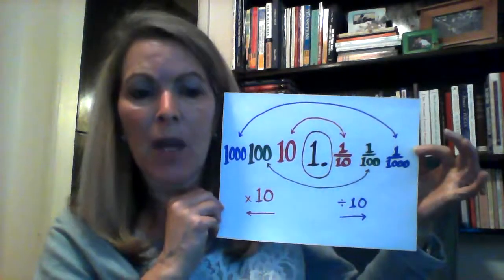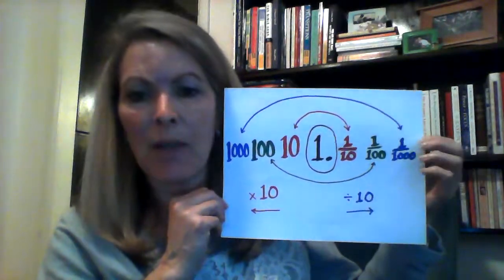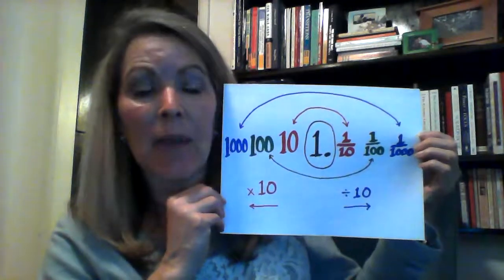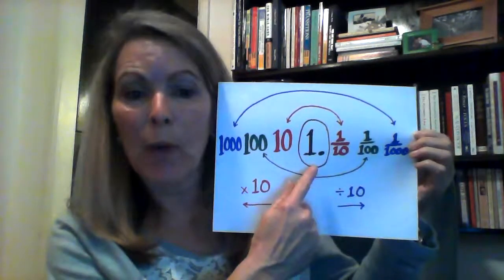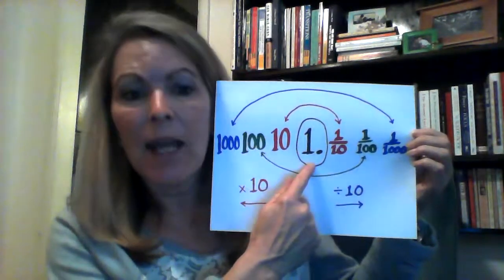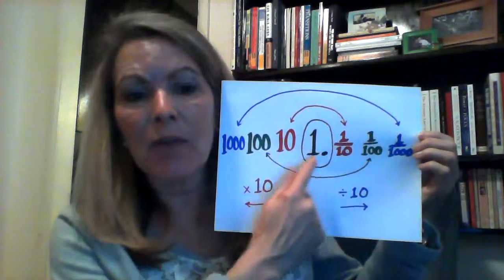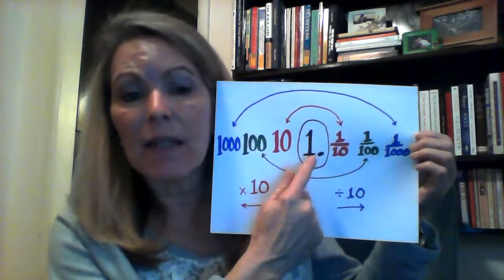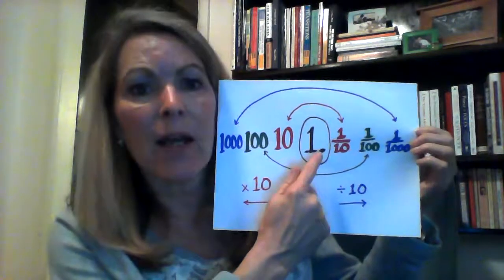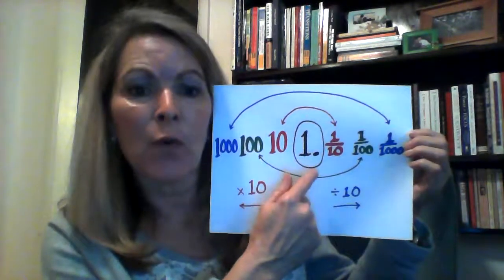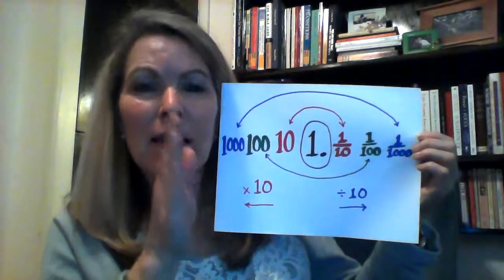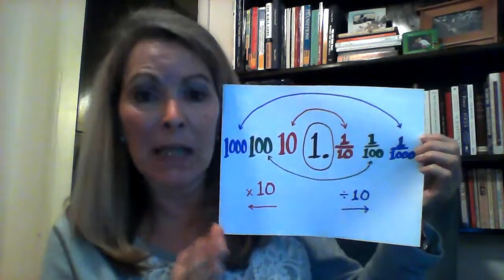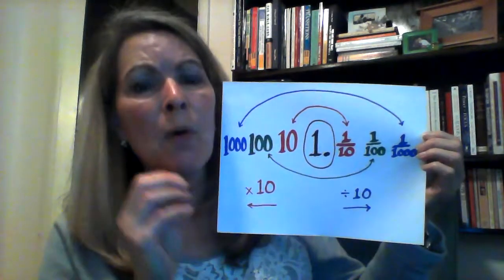Now, the reason that I have them circle this is because when we look at a number written in standard form, it seems like the decimal point is actually the middle of the number. But what it is is just the point where whole numbers end and fractional numbers or decimals begin.